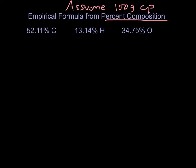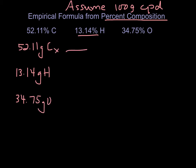If I have 100 grams of compound, then if 52.11% of it is carbon, then I have 52.11 grams of carbon. If 13.14% of it is hydrogen, I have 13.14 grams of hydrogen. And I have 34.75 grams of O. So again, start by changing grams to moles for all three of them.